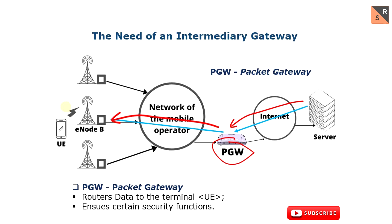If we consider data transfer to a terminal when this terminal is moving, we can see we will have to notify the PGW and route data not to the former eNB where the subscriber was before, but to the new eNB. This routing requires the exchange of signaling messages. To avoid frequent routing changes at the level of the PGW, we will introduce intermediary equipment.